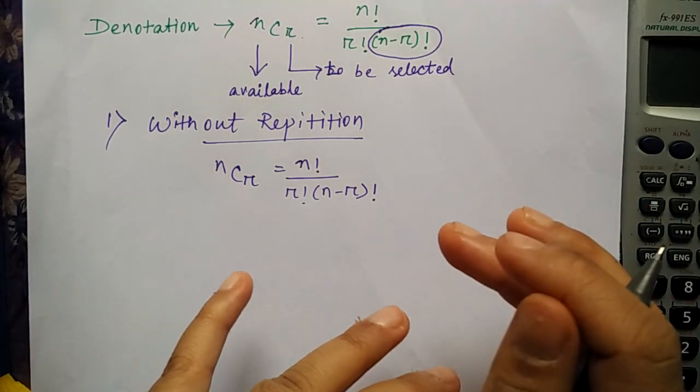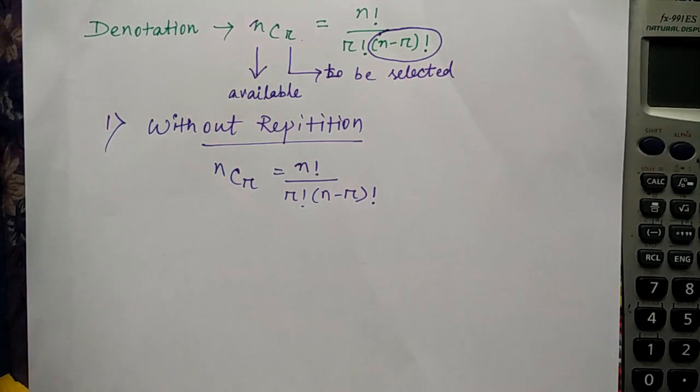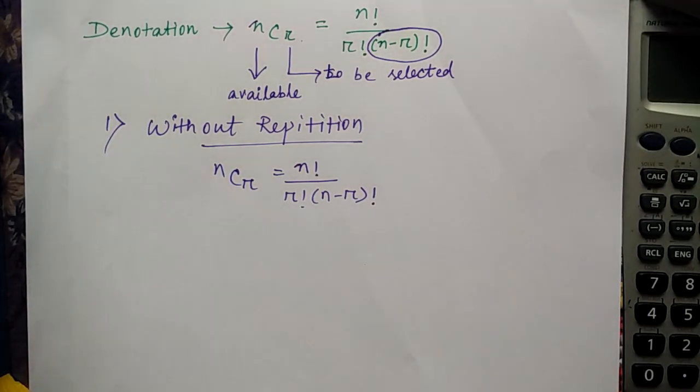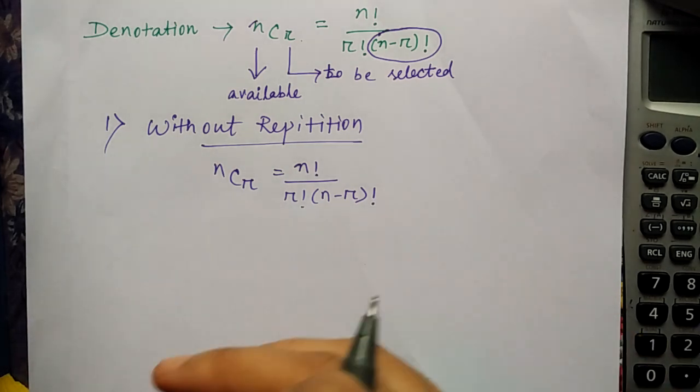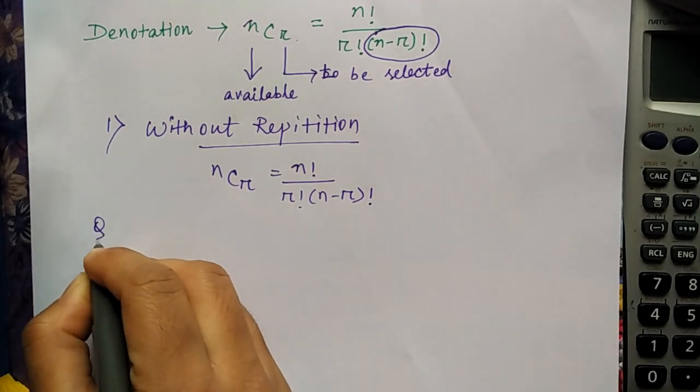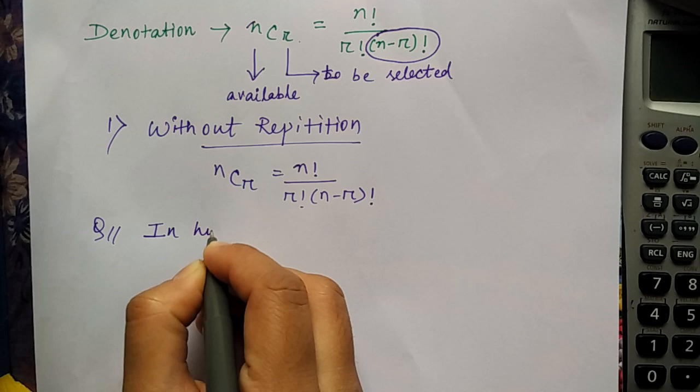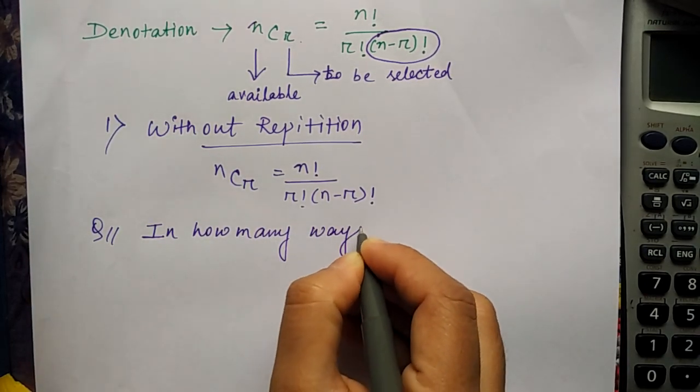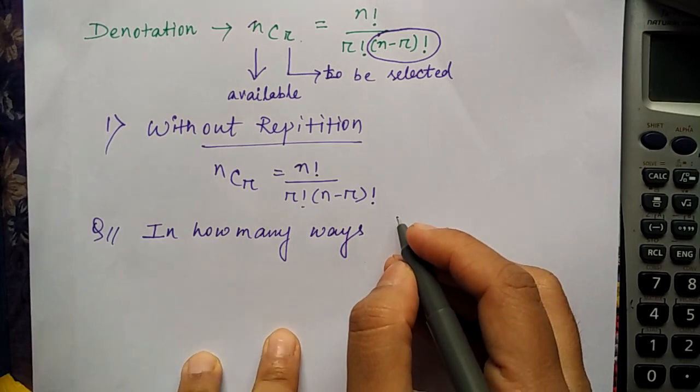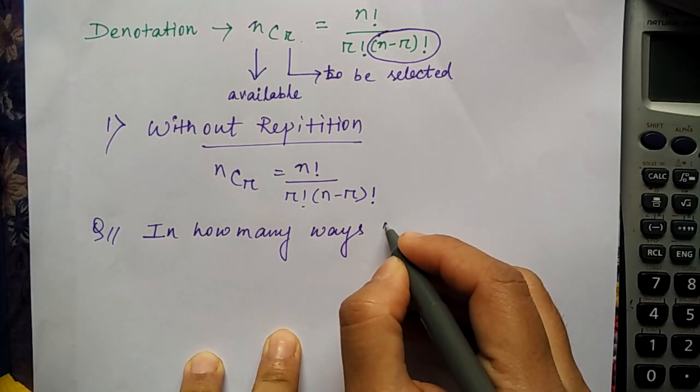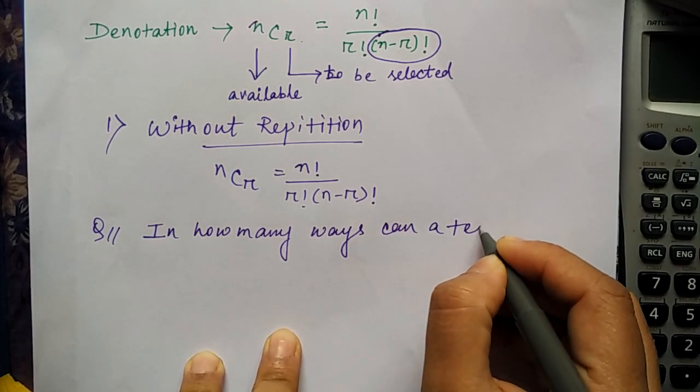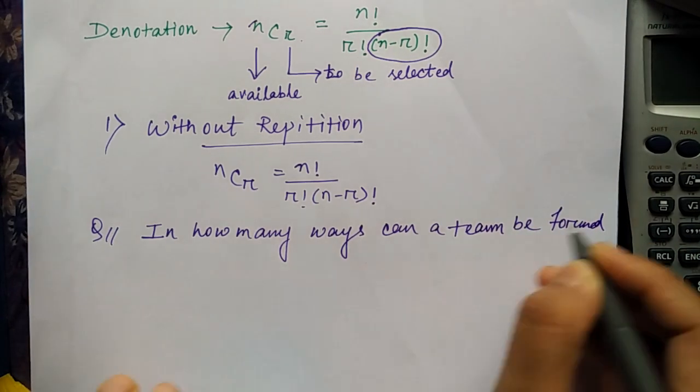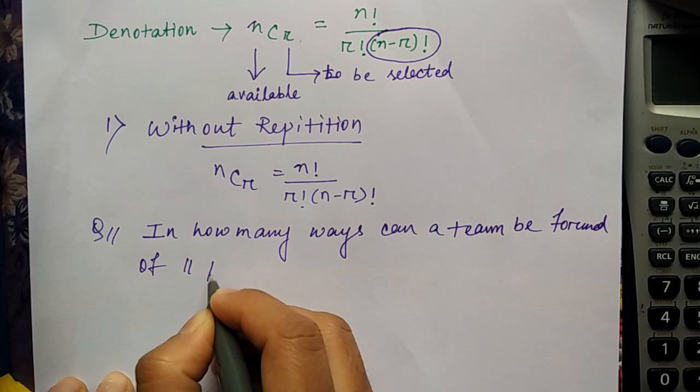We'll see how to solve the problem without repetition. I wrote the formula. Let me tell you a question: in how many ways can a team be formed of 11 players?